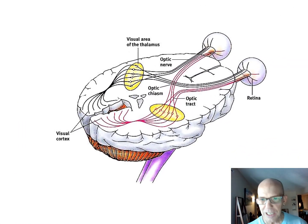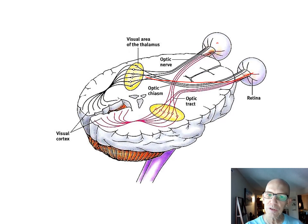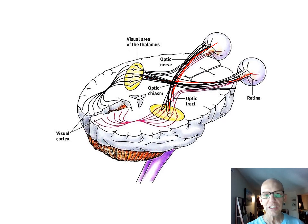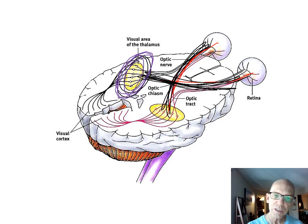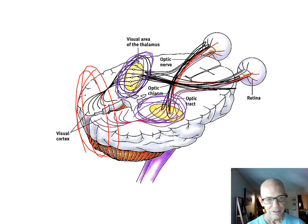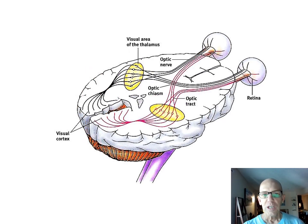To summarize the visual pathway: the two optic nerves cross at the chiasm, go to the two thalami, and then the signal is sent all the way to the back — the occipital lobe.